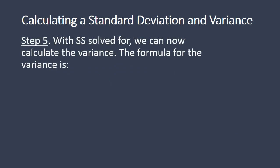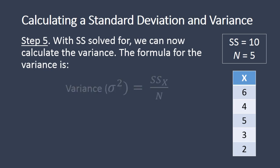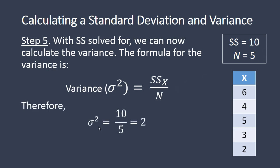With SS solved for, we can now calculate the variance. The formula for the variance is: variance equals SS over N. Here SS is 10 and N is 5 — as a reminder, N counts how many values we have, so there are 5 values. To calculate the variance, we take 10 and divide it by 5, which gives us a variance of 2.